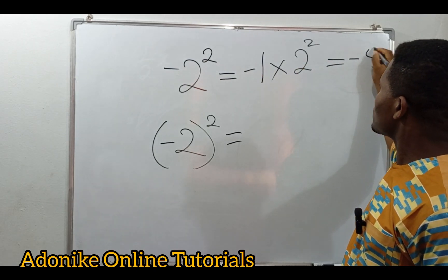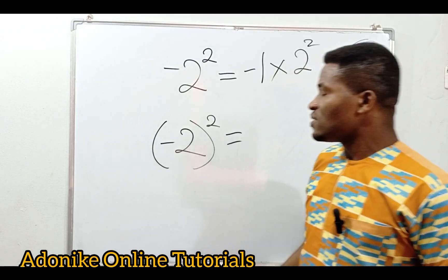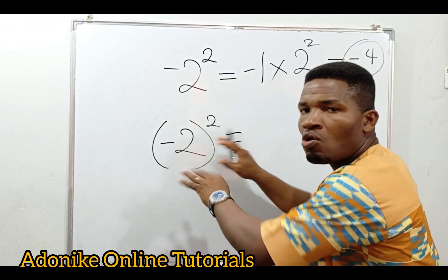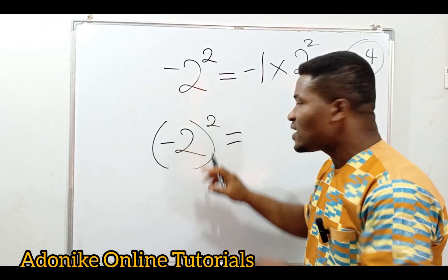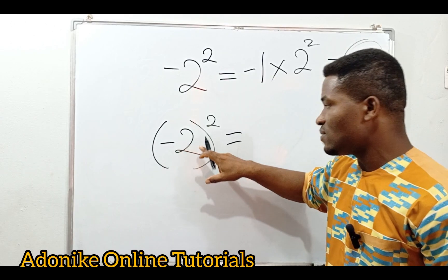This is what is coming for the first one. Now for the second one, this is minus two all squared, indicating that the square will be affecting the negative sign and the value here being two.